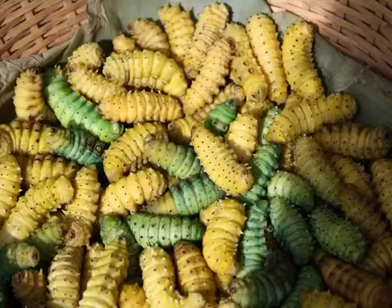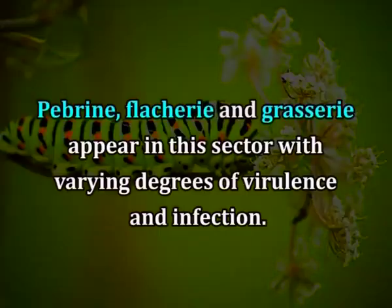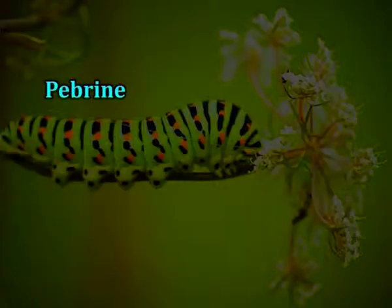The present topic is diseases and pests of eri and muga silkworms. Like mulberry silkworms, eri and muga silkworms are also prone to several virulent and infectious diseases and pests. The germs and symptoms of the diseases are more or less similar to those of mulberry silkworm diseases. Pebrine, flacherie, and grasserie appear in this sector with varying degrees of virulence and infection. However, many of these diseases rarely cause damage if worms are kept under hygienic conditions and fed good quality leaves.